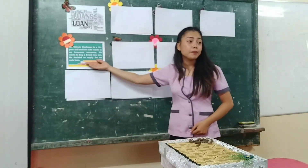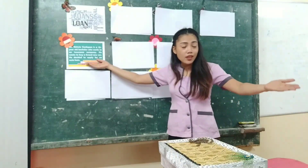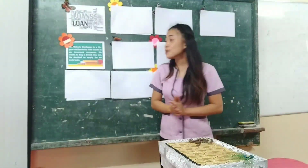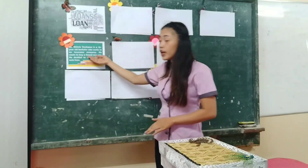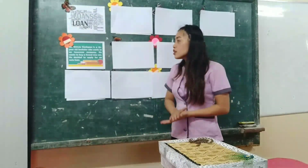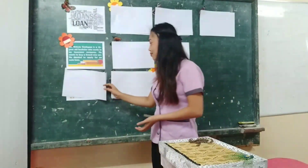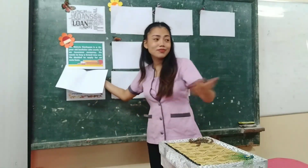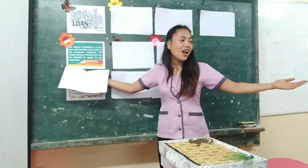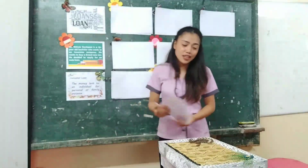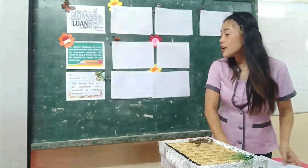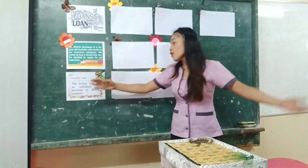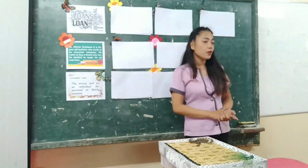So what's your answer, group 1? Your answer is consumer loan. Why did you answer consumer loan? Very good — it's because the purpose is to buy a brand new car. So now, what is consumer loan? Anybody from group 1 who wants to share their idea? Thank you for sharing your idea. Consumer loan is the money lent to an individual for personal or family purpose.